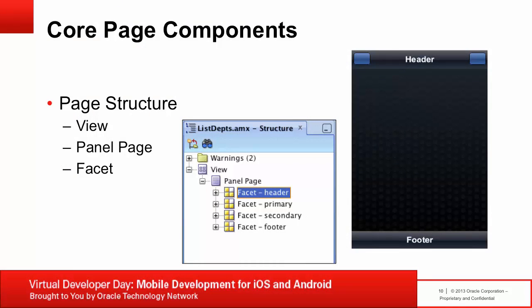At the root of an AMX page you have a view — a core page structure component automatically inserted when the file is created, providing a hierarchical representation of the page. On the next level is a panel page, which defines a scrollable area for laying out other components. You can use FACET components to define areas such as header or footer. For example, a component inside the FACET named 'header' renders as a bar across the top of the page, while a component in the 'primary' FACET renders in the upper left corner, typically used for a back button.